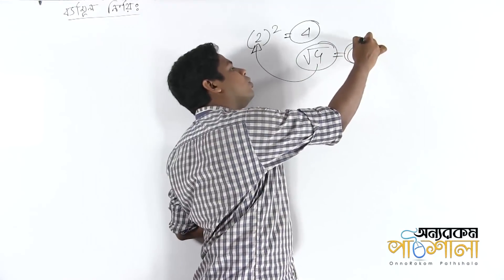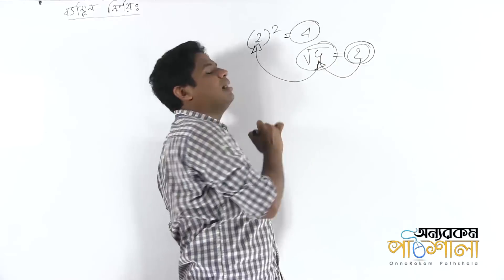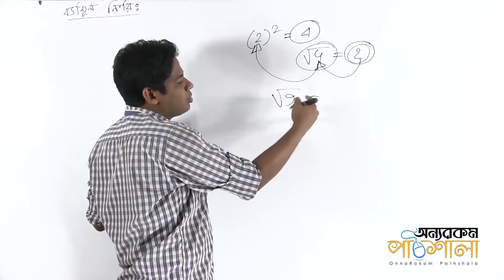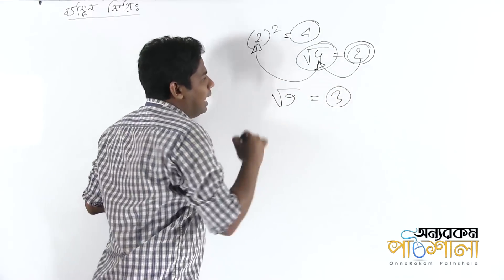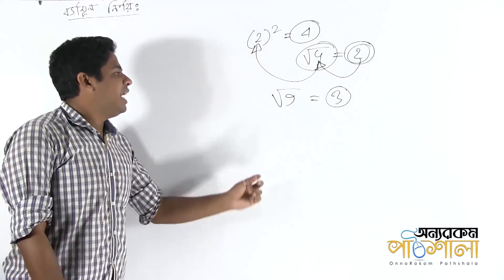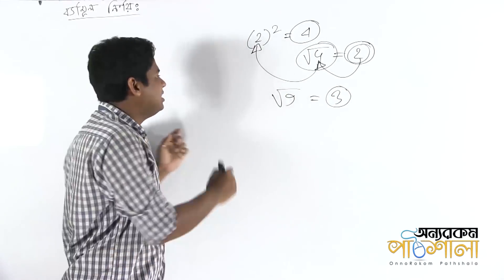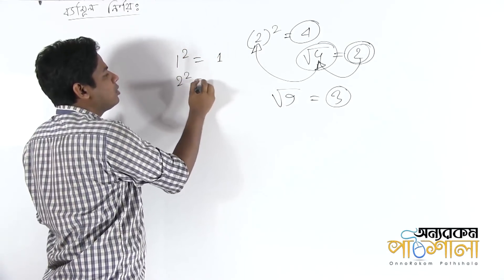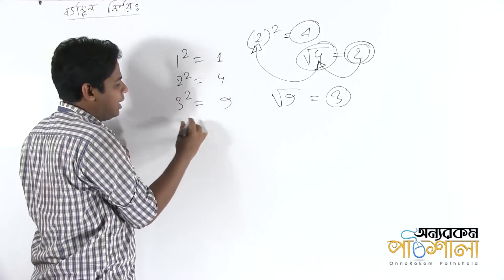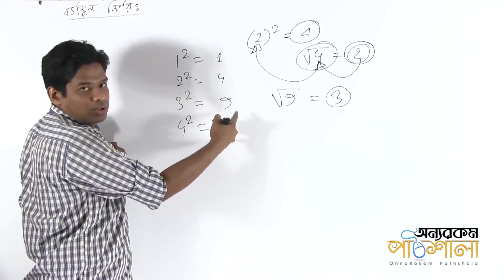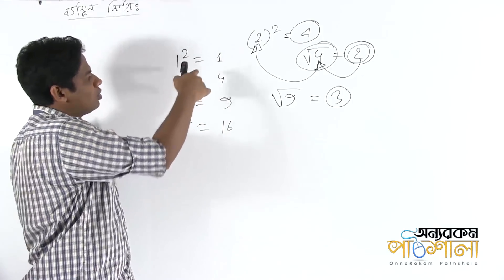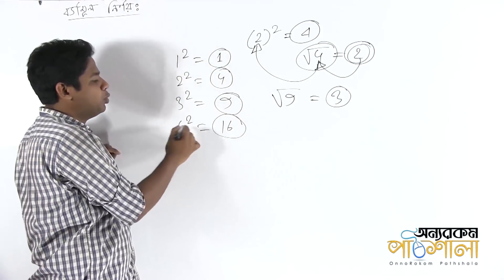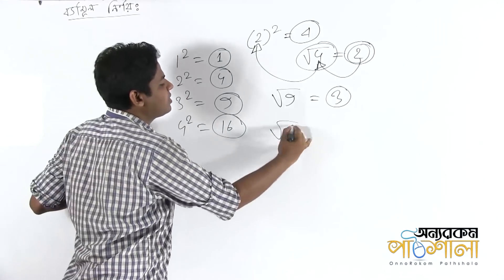Which number is equal to a perfect square? I will tell you: 1 squared is 1, 2 squared is 4, 3 squared is 9, 4 squared is 16. So I will tell you that this number is a perfect square.